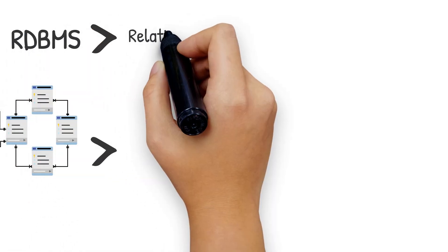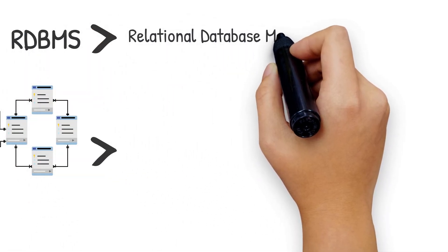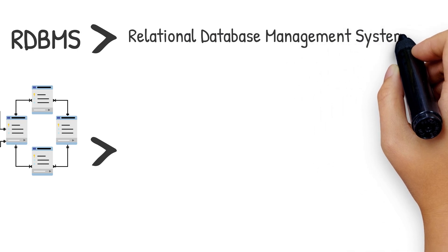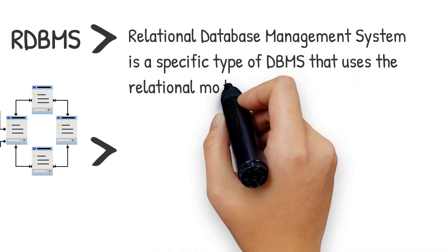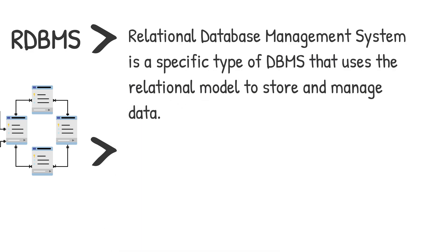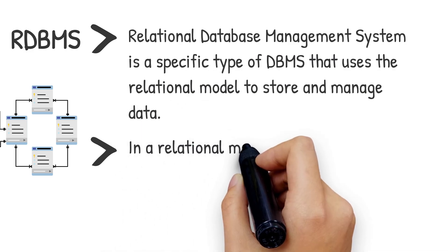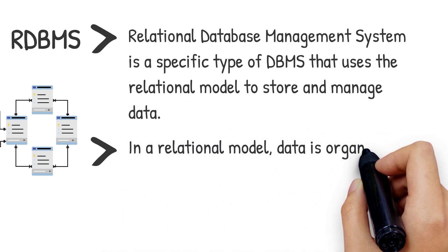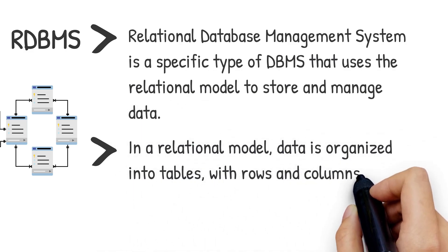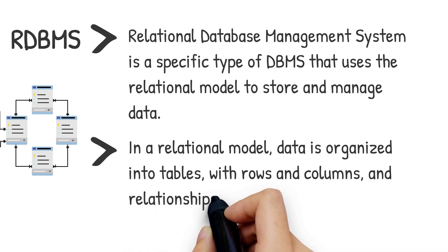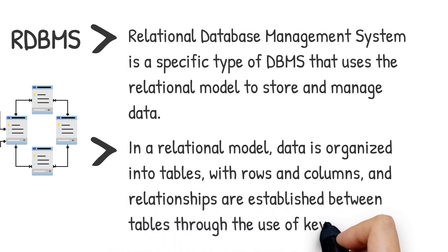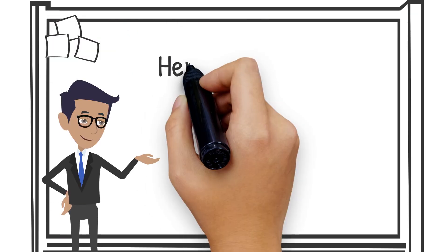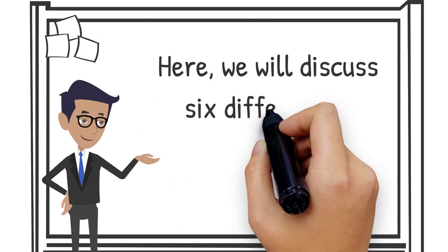A relational database management system is a specific type of DBMS that uses the relational model to store and manage data. In a relational model, data is organized into tables with rows and columns, and relationships are established between tables through the use of keys. Here, we will discuss six differences between both.